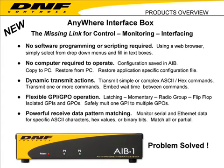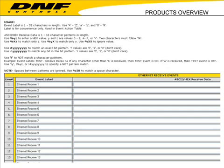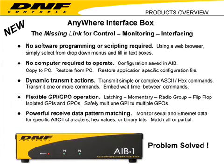The AIB has powerful receive data pattern matching. You can monitor serial and Ethernet data for a specific ASCII character, a specific sequence of characters, specific hex values, or specific binary values. You can even monitor specific bits within a pattern — monitoring one bit or multiple bits, testing for a specific pattern, or testing if any bits are set. This gives you a lot of power when monitoring serial or Ethernet data to determine exactly what you want to look for.